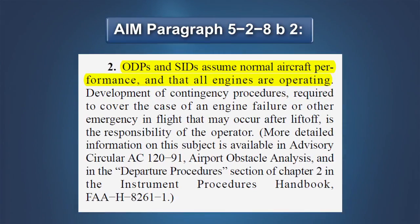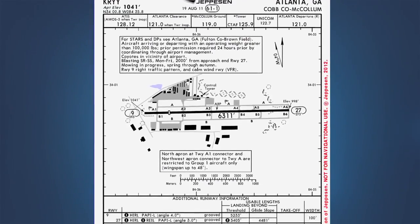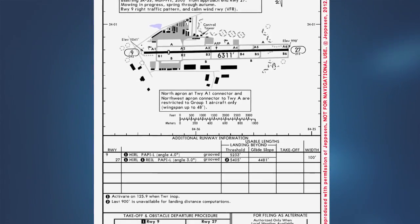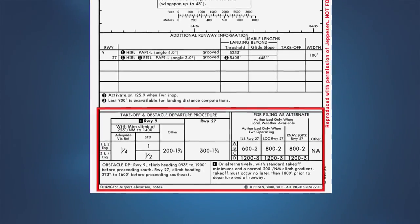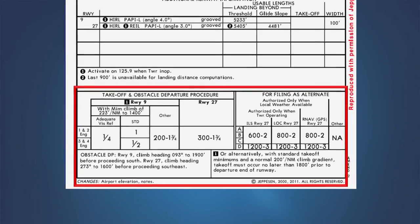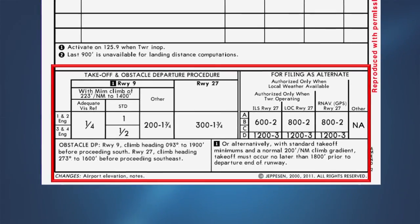If an engine fails on takeoff in a transport category airplane, the operating rules and procedures previously discussed are used to address that failure. The IFR departure procedure is no longer applicable. The pilot should refer to the engine failure contingency procedure for the runway in question. The climb gradient published on a SID or ODP is treated as a plane originating at the end of the runway that must not be penetrated from above until reaching the published altitude — as opposed to a gradient which must be exceeded at all points in the path. The climb gradient on a SID may also be established to meet an ATC requirement, such as separation from other airplanes, and therefore may be greater than what is required for obstacle clearance.